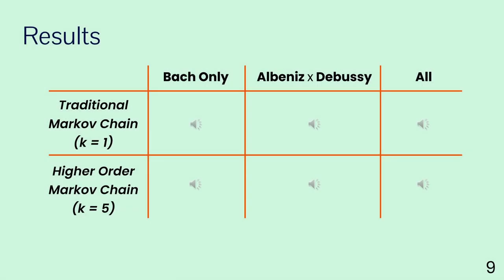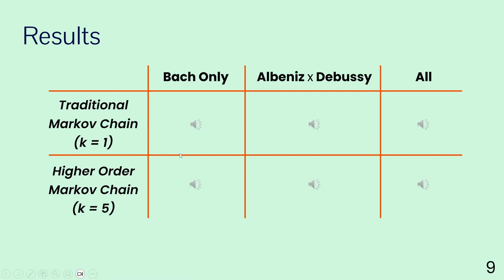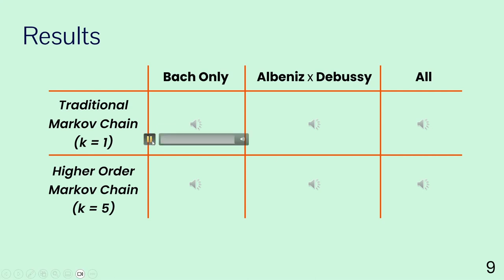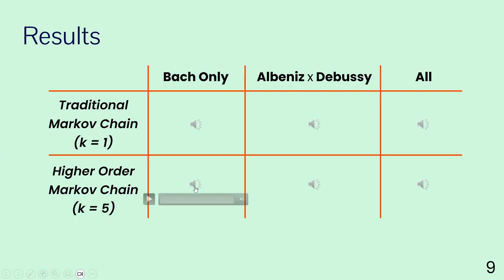To showcase the results I obtained for this project, we have a matrix of results that can be seen in the submitted MIDI files. We can actually hear the difference between a traditional Markov chain on Bach versus a higher order Markov chain on Bach, to see the difference between the two approaches on a single composer.